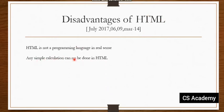The next disadvantage is that any simple calculation cannot be done in HTML. HTML is a text-oriented language, so we can only do text formatting. We cannot perform calculations in HTML because it is not a programming language. This is a disadvantage of HTML.